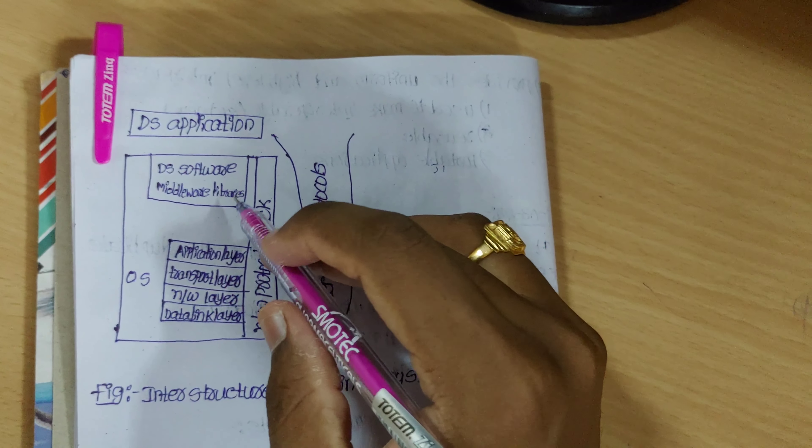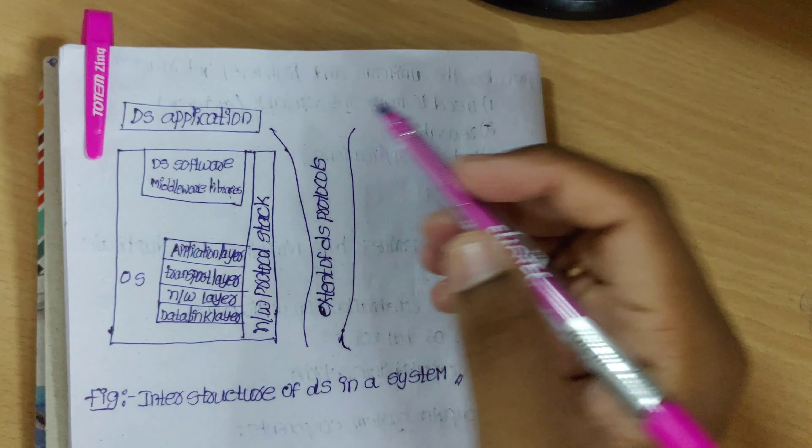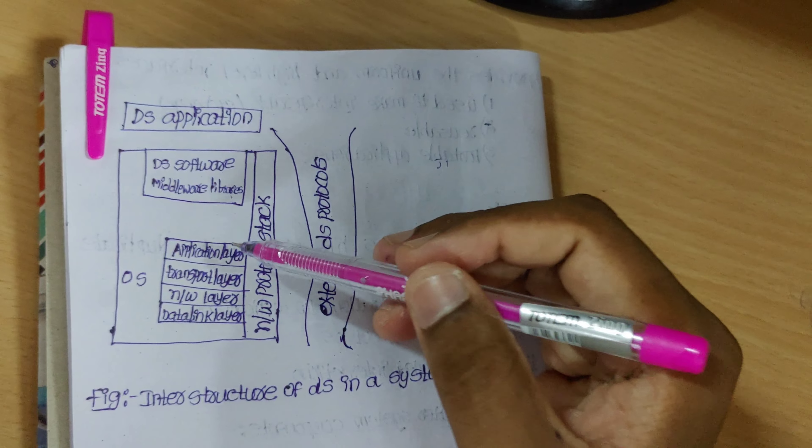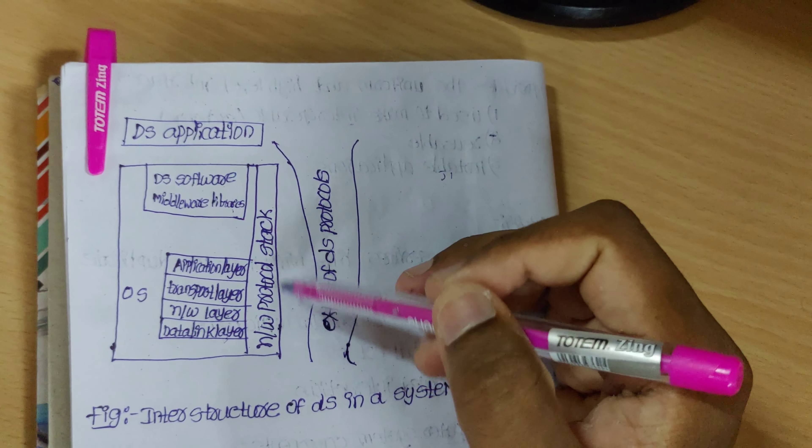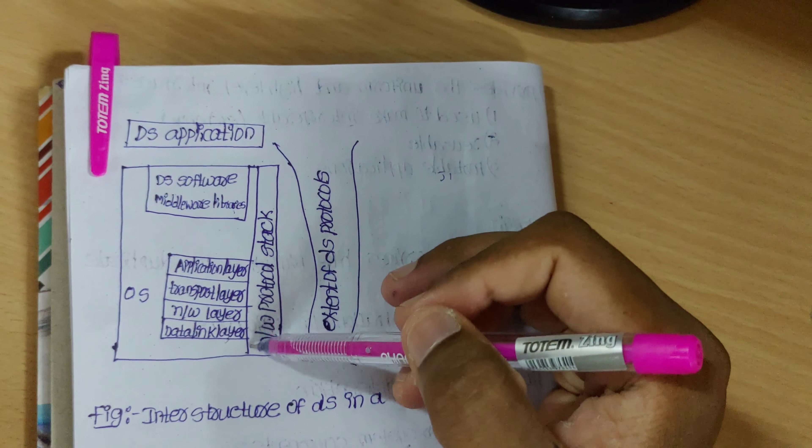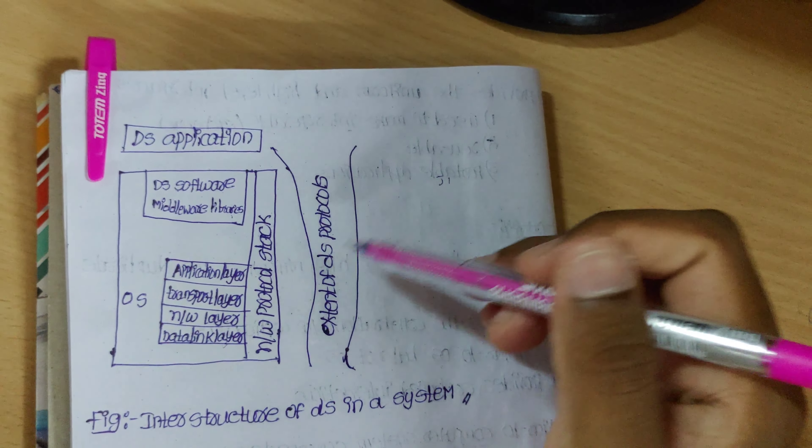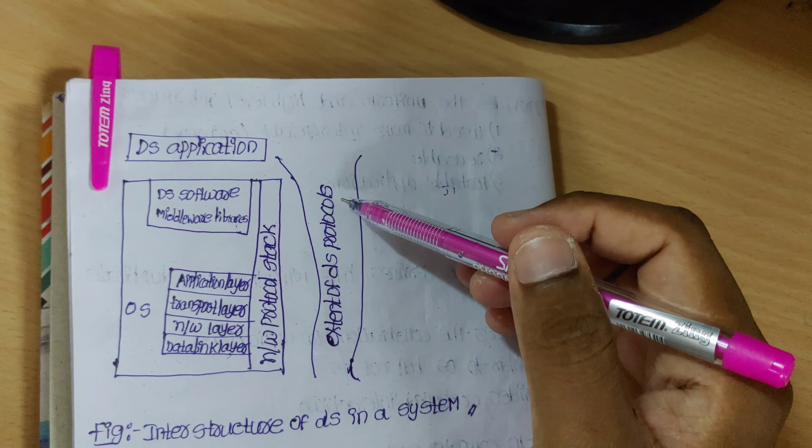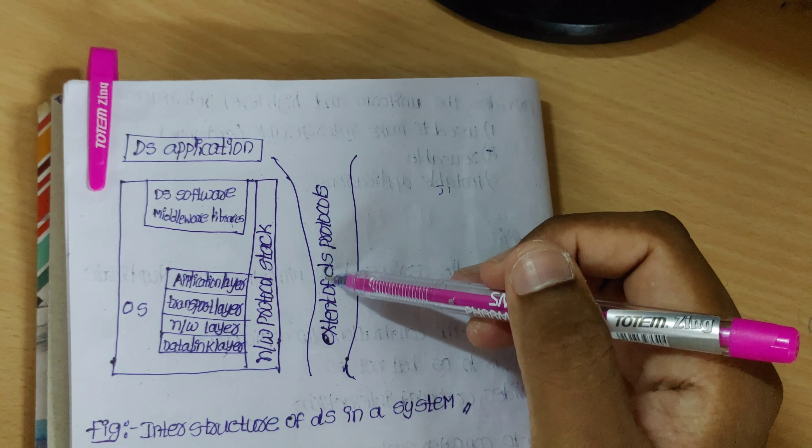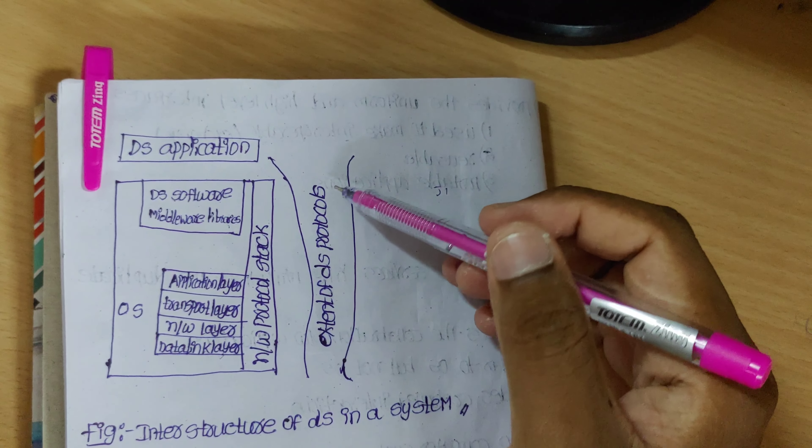Likewise, suppose you have a lab in college and you share a particular system in that lab. In this case, we have the OSI layer reference model: the application layer, transport layer, network layer, and data layer. A particular task will help run and complete the work.